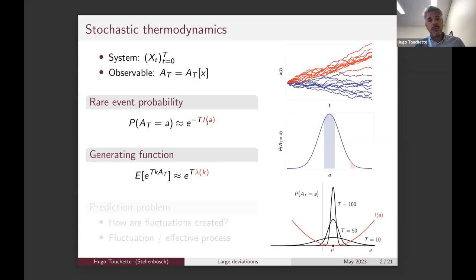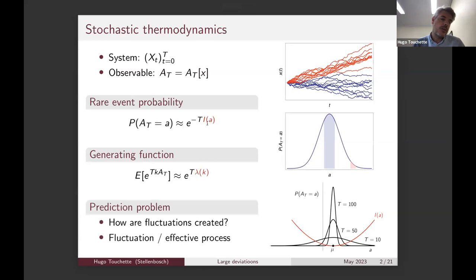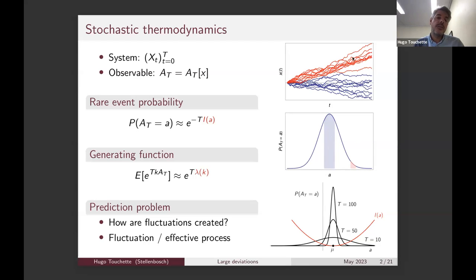This will be the main problem we focus on. But at the end I'll also discuss what we call the prediction problem: we want to understand how fluctuations are created. If I look at different trajectories, most of the time I'll see typical values of the observable, but I might be interested in a large fluctuation. I can relate those fluctuations to rare trajectories, and the problem is to find an effective process — described by some modified force or current or density — that describes only those rare trajectories.